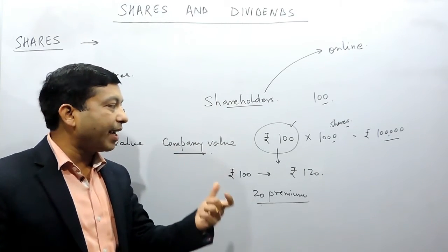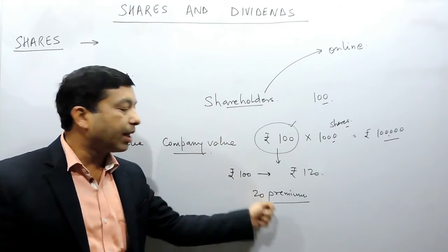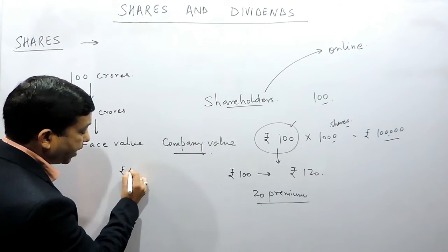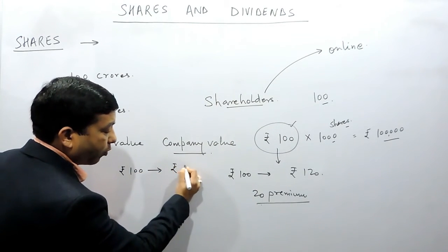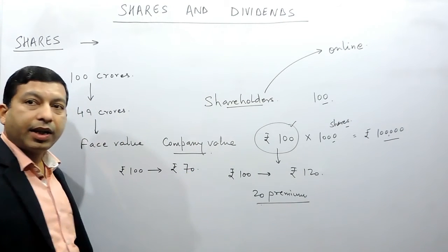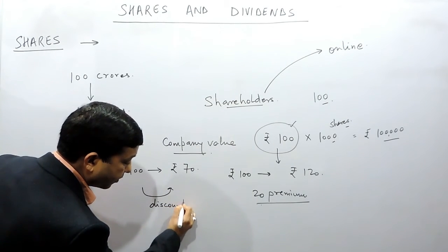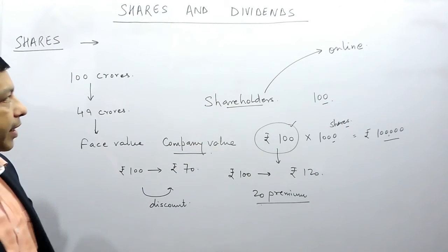That means the premium in the share. On the other hand, there is a possibility that a rupees 100 share of the company can go for rupees 70. That means here there is a discount in the share. The language which goes into this aspect is rupees hundred share at five premium.